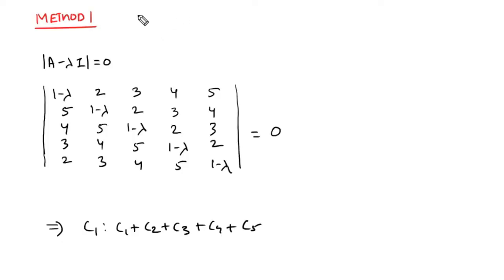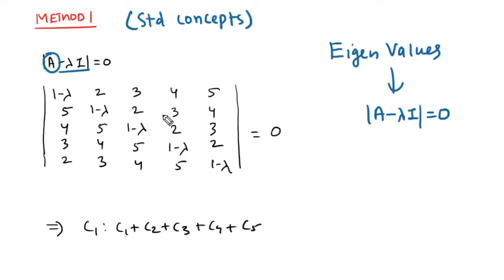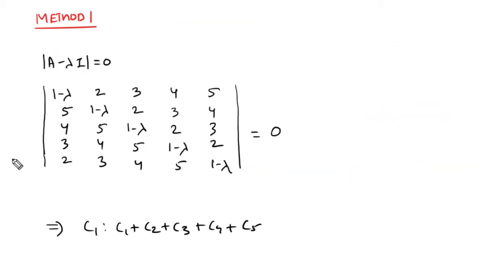So let us see method 1. How to solve this question using the standard approach, using your normal standard concepts. It simply says, if you need eigenvalues, then you need the characteristic equation, which is determinant of A minus lambda I equal to 0. So we have taken that matrix A and subtracted lambda I. So I am getting this determinant. A big 5 cross 5 determinant. Many students will say, sir, we have to solve a 5 cross 5 determinant. It's a very very tedious process. If you solve the 5x5 determinant in the exam, only this question will be done and no other question will be done. And hence you have to avoid this lengthy process. Instead, observe this determinant.